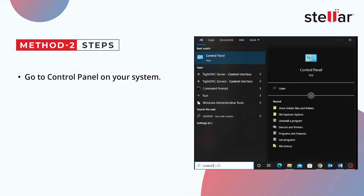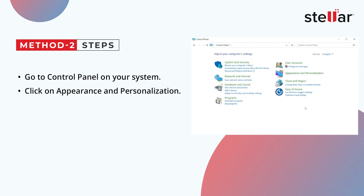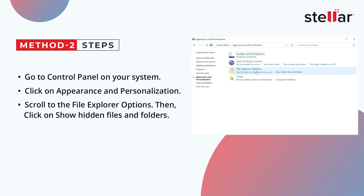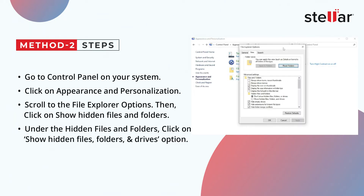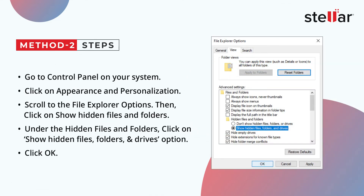Just go to Control Panel on your system. Click on Appearance and Personalization. Next, scroll to the File Explorer options. Then, click on Show Hidden Files and Folders. Under the Hidden Files and Folders, click on Show Hidden Files, Folders, and Drives option. Then click OK. All your hidden photos and folders will be visible now.